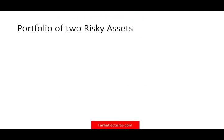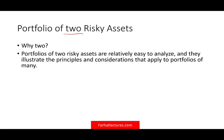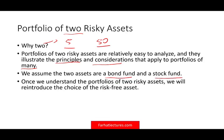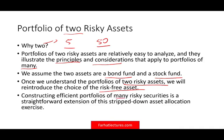Let's take a look at a portfolio of two risky assets. Why do we choose two risky assets to illustrate this portfolio? Because it's relatively easy to analyze — you only have two assets or two securities and they illustrate the principles. It doesn't matter; the considerations apply to a portfolio of many. So whether you have two, five, or 50, the concept is the same. We're going to be assuming two assets: a bond fund and a stock fund.